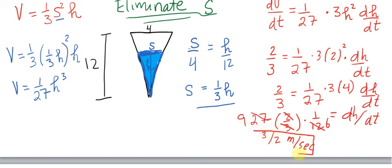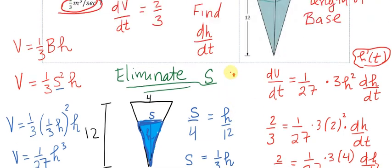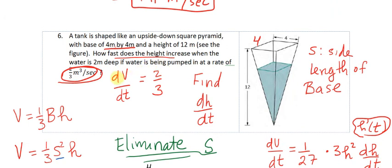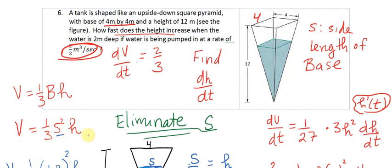3 over 2 meters per second would be equal to dh/dt. So I want to emphasize something here in this problem, which is that we could solve it using both s and h and V.